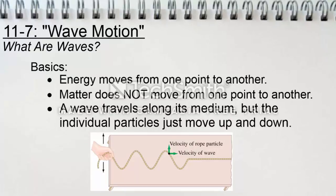Now we have section 7, wave motion. Waves are rhythmic disturbances that carry energy without carrying matter. Some basics to know about wave motion: energy moves from one point to another, from point A to point B, while matter does not. A wave travels along its medium, but the individual particles just simply move up and down.